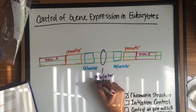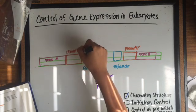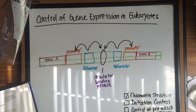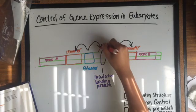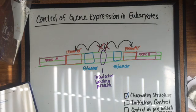One of these is the insulator. Here, enhancer 1 can stimulate the transcription of gene A, but its effect on gene B is blocked by the insulator. On the other side, enhancer 2 can stimulate the transcription of gene B, but its effect on gene A is blocked by the insulator.